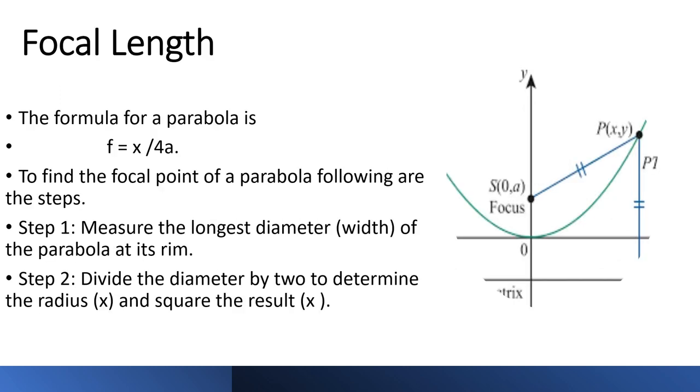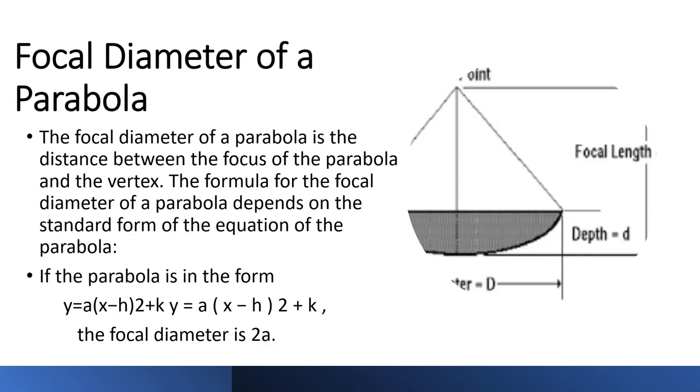The formula for a parabola is F = X / 4A. To find the focal point of a parabola, the following are the steps: Step 1 is measure the longest diameter, or width, of the parabola at its rim. Step 2 is divide the diameter by 2 to determine the radius X and square the result X.